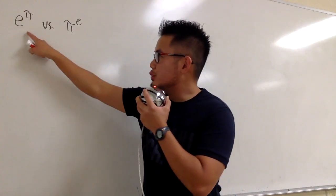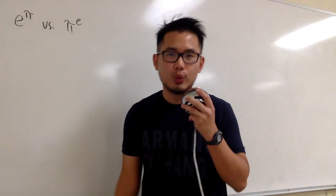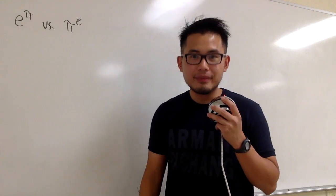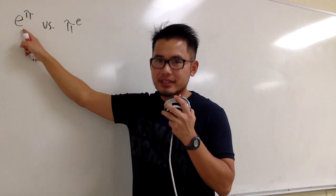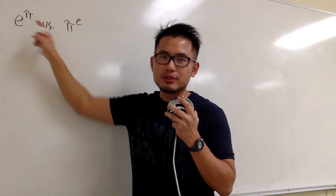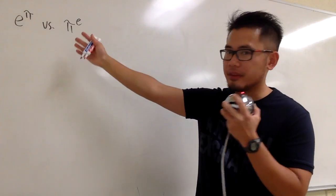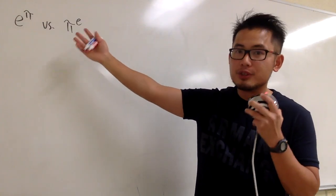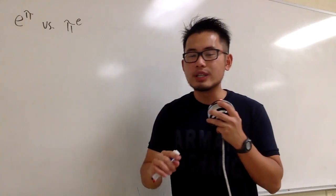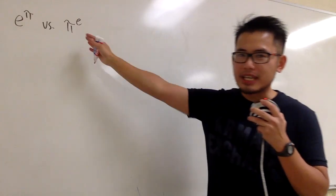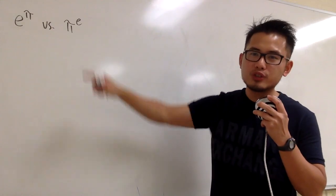Here we have e to the pi versus pi to the e. Which one is bigger? As we know, e is about 2.71 something, and pi is about 3.14 something. However, both of them are irrational, so we cannot just compute it. And of course, we are not going to use a calculator, otherwise that would defeat this great question.